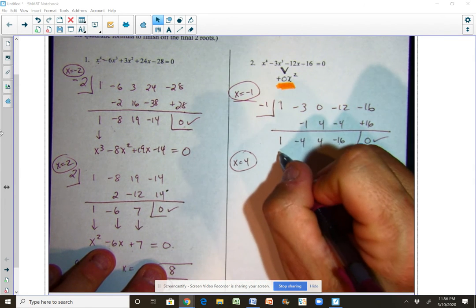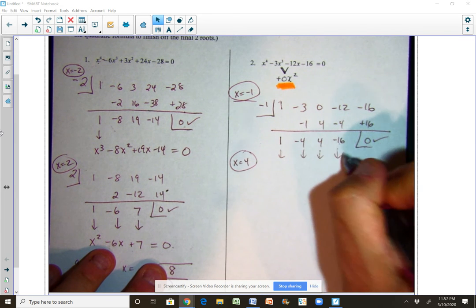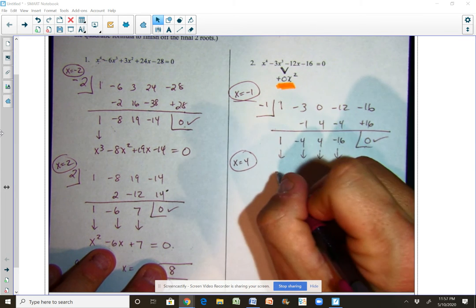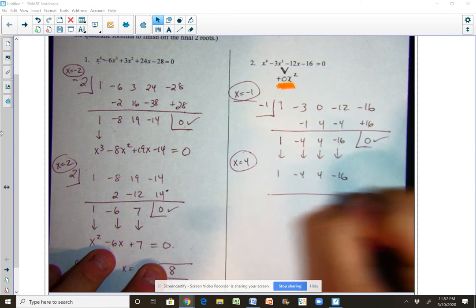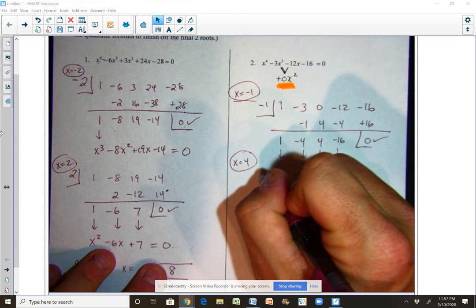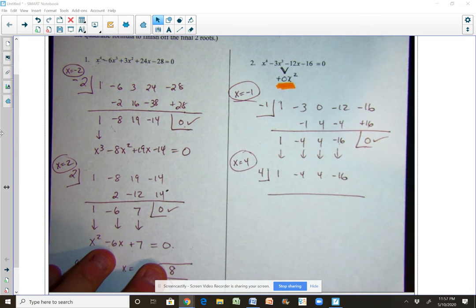So I'm just going to take these same coefficients, I don't even have to write out the equation again because I know they're going to be the coefficients 1, minus 4, 4, and minus 16, and I'm going to synthetically divide out the other rational root of x equals 4.